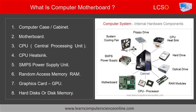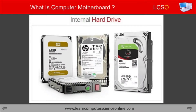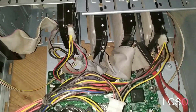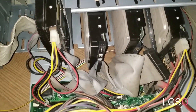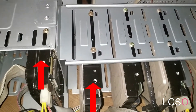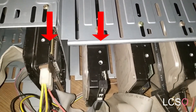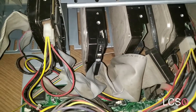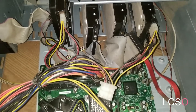The third important component connected to the motherboard is the hard disk. The hard disk is considered the secondary memory of the computer, also called permanent memory. The motherboard provides a specific connection socket to connect the hard disk. The hard disks are mounted inside the computer case, which provides multiple mechanical slots for mounting the hard disk drive. The hard disk is connected to the motherboard using a SATA connection cable for data transfer during read and write operations.